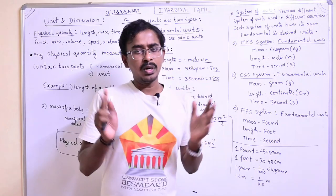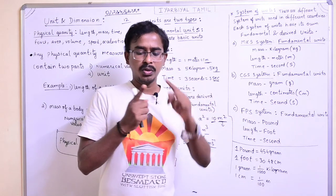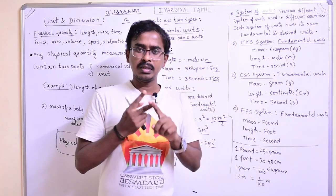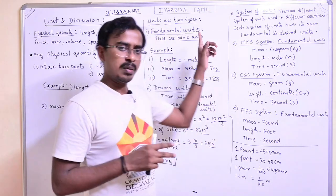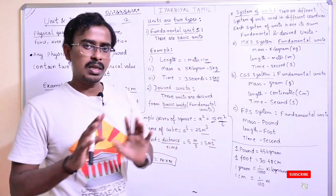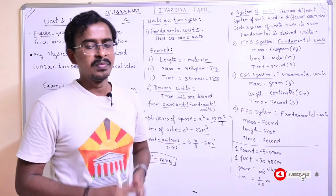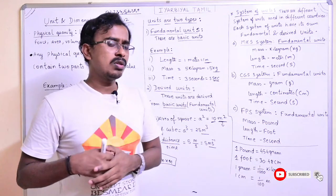So, one physical quantity has two parts: one is numerical, the other is units. Units are of two types: fundamental and derived.